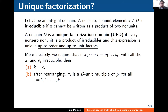D is called a unique factorization domain if every non-zero non-unit can be written as a product of irreducibles, and this expression is unique up to order and up to unit factors. If I have one product of irreducibles — say the π_i — equal to another product — say ρ_j — then uniqueness means the same number of terms on both sides, so k should equal l. After rearranging, π_i is a unit multiple of ρ_i for every i from 1 through k.